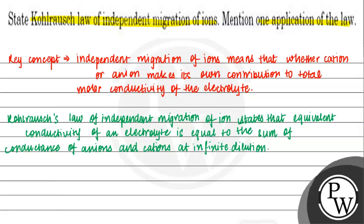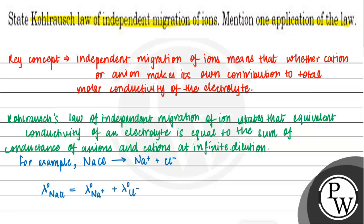For example, suppose we have an electrolyte which is NaCl. We know NaCl dissociates into Na⁺ plus Cl⁻ ions. So, if we have NaCl, the limiting molar conductivity λ°(NaCl) equals the limiting molar conductivity of Na⁺ ions plus the limiting molar conductivity of Cl⁻ ions. Here, λ°(NaCl) represents the limiting molar conductivity of the NaCl electrolyte.